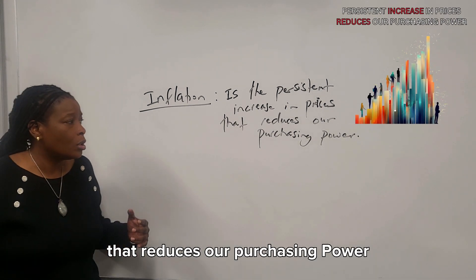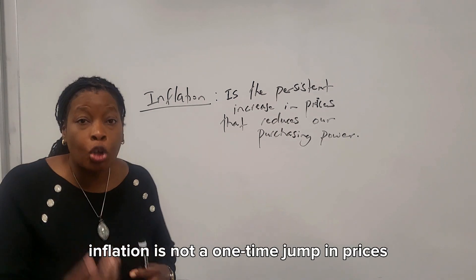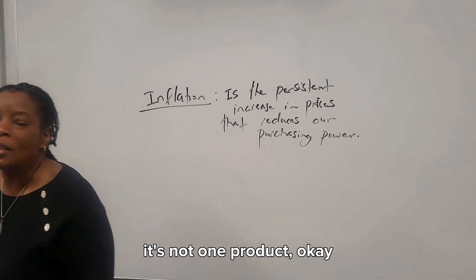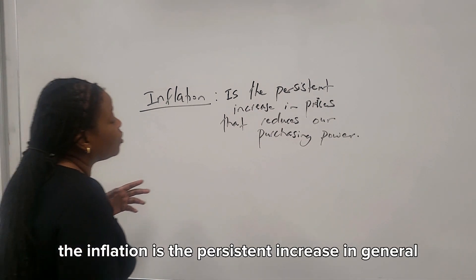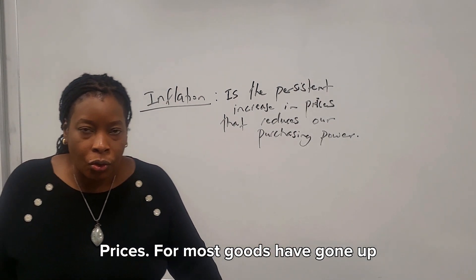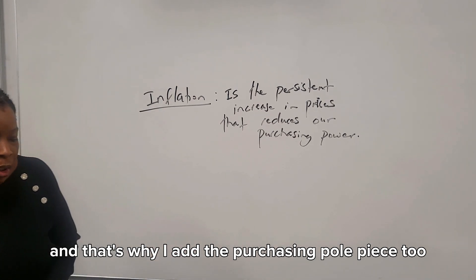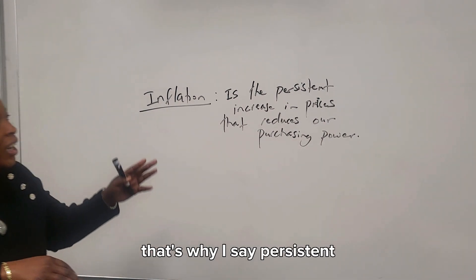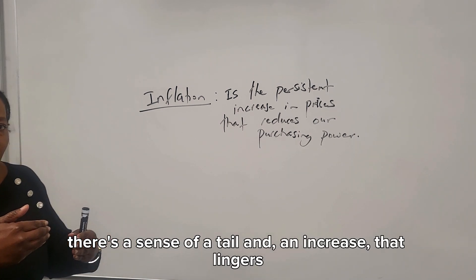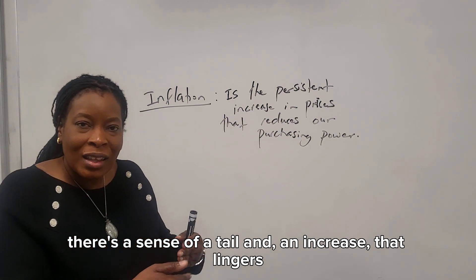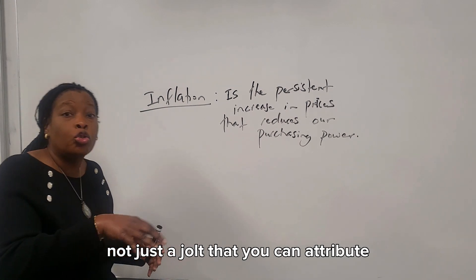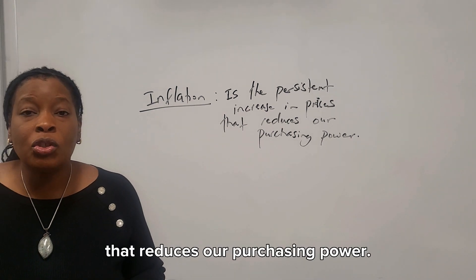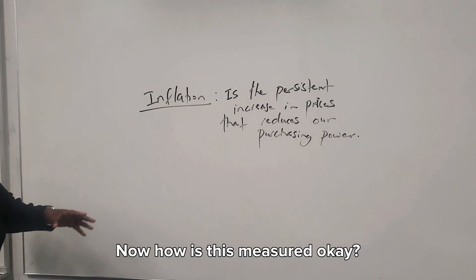Oftentimes I say inflation is not a one-time jump in prices. You don't go into Starbucks and say the caramel macchiato is ten dollars — that's inflation. It's not one product. Inflation is the persistent increase in general prices for most goods. That's why I add the purchasing power piece too, because you tend to feel like your money is not stretching as much. It's also not just a one-time shock — that's why I say persistent. There's a sense of a tail and an increase that lingers.